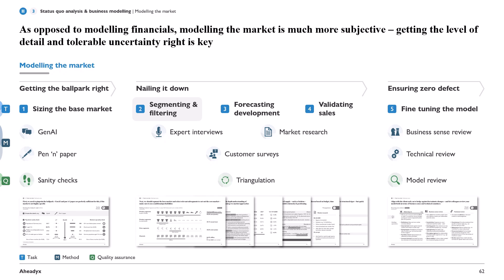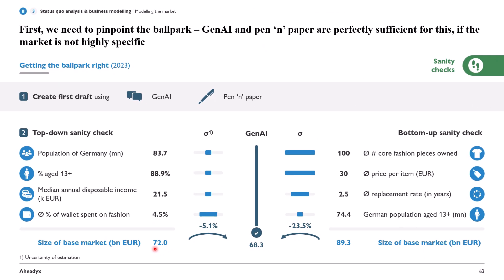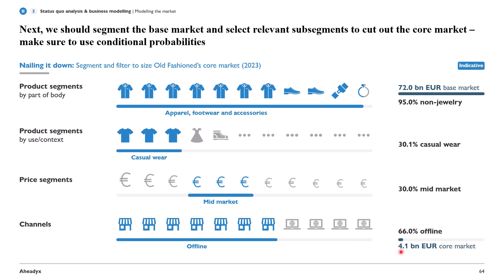Now that we got the ballpark right, it's time to nail it further down. We will next look into segmenting and filtering. Specifically, we will want to break down those 72 billion — the size of the base market — down to those 4.1 billion on the lower right-hand corner, the core market size. The idea here is to move from the general base market, which is the fashion retail market in Germany, to the core market that's really specific to the client specifics.